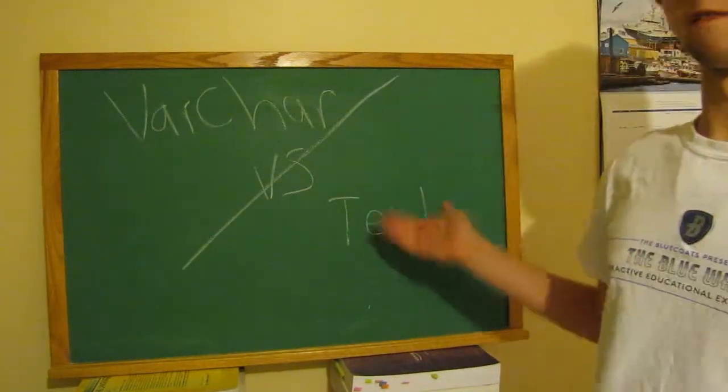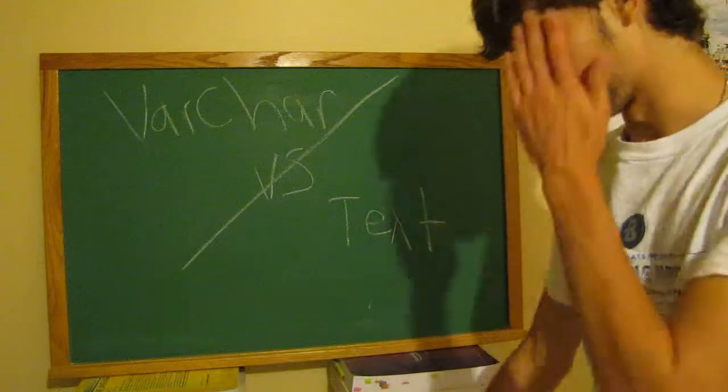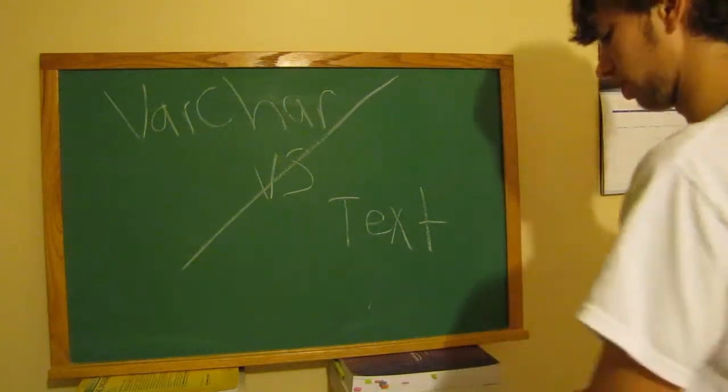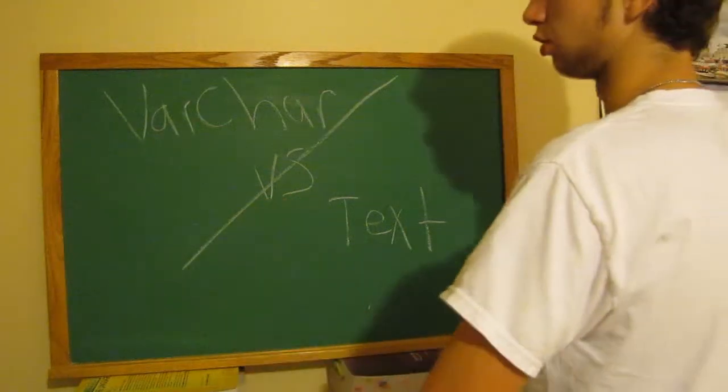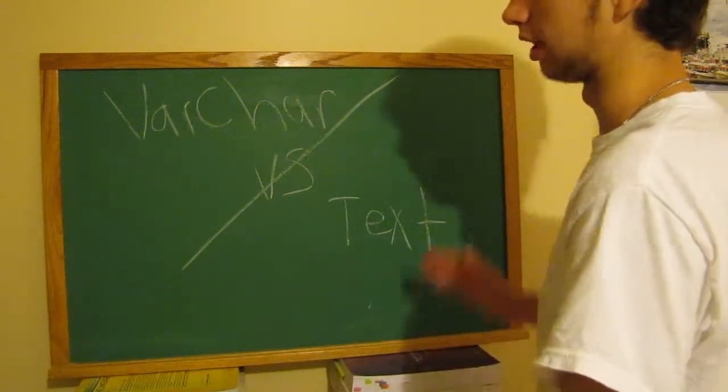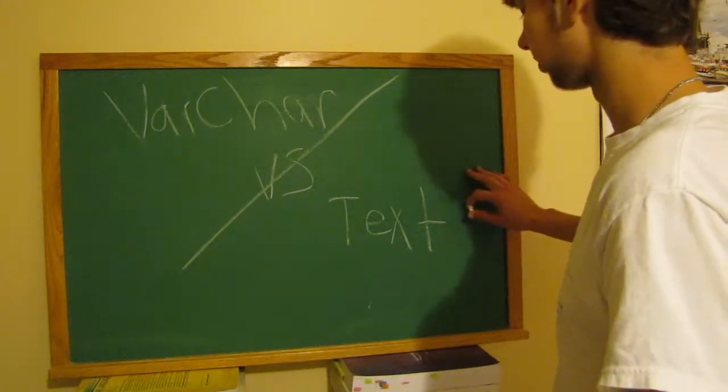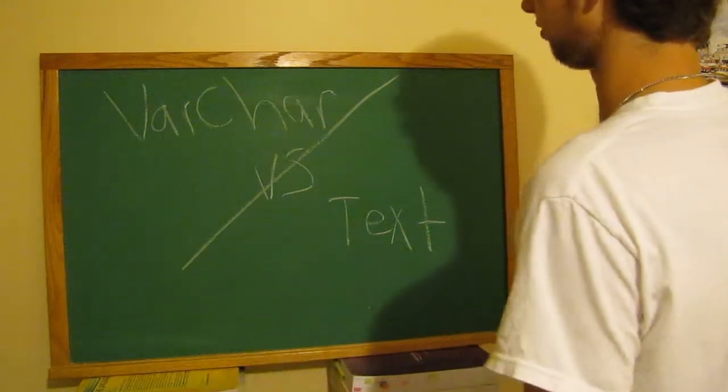Here we have varchar versus text. Now, if you remember, varchar was a variable storage. As in, varchar 10, you could enter dog, and it would cut everything short to 3 characters. Whereas, text will also do that. So, what's really the difference?